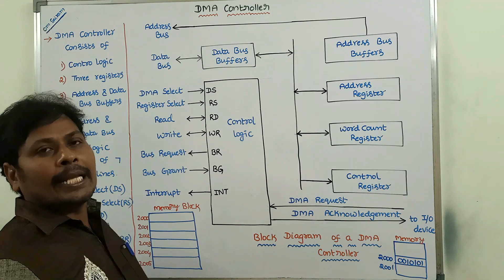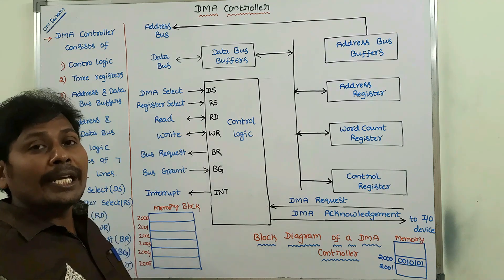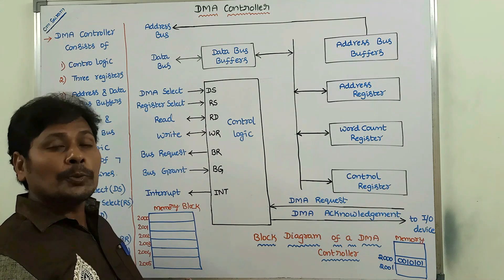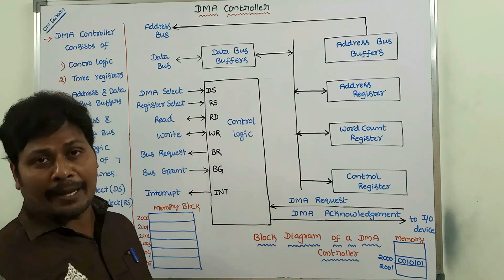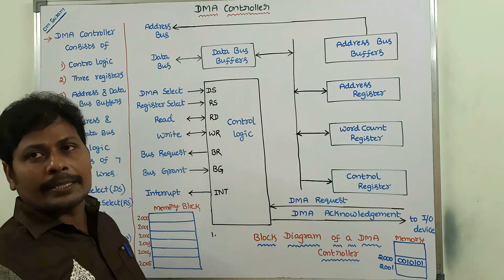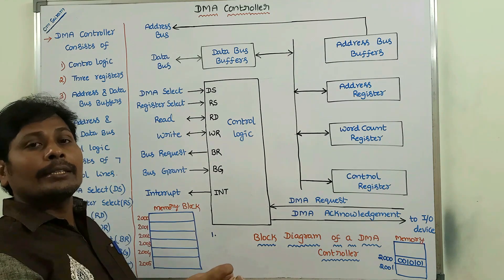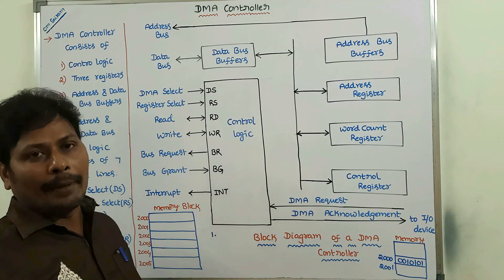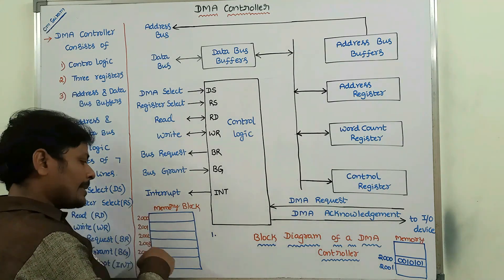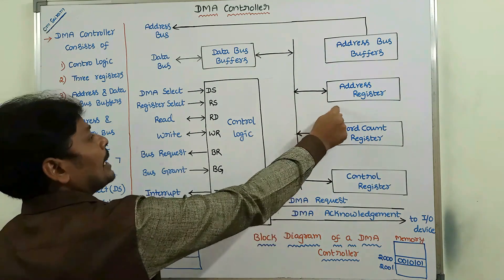Now, how does the DMA controller work? The CPU sends the following information through the data bus to initialize the DMA. First, the memory block's starting address — where data is to be written into or read from memory — is specified in the address register. For example, if the memory block starting address is 2000, it is stored in the address register.